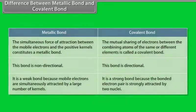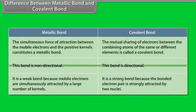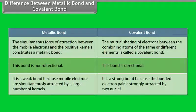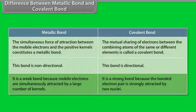Difference between metallic bond and covalent bond. The simultaneous force of attraction between the mobile electrons and the positive kernels constitutes a metallic bond, whereas the mutual sharing of electrons between combining atoms is called a covalent bond. A metallic bond is non-directional, whereas a covalent bond is directional. A metallic bond is weak because mobile electrons are simultaneously attracted by a large number of kernels, whereas a covalent bond is strong because the bonded electron pair is attracted by only two nuclei.